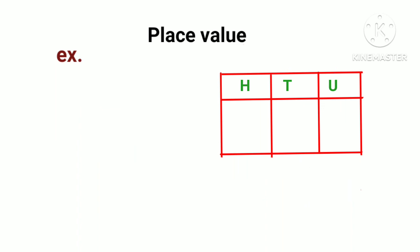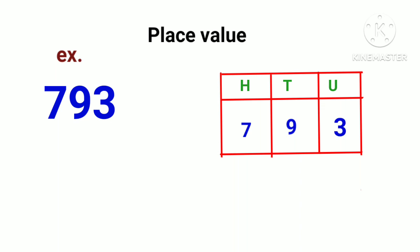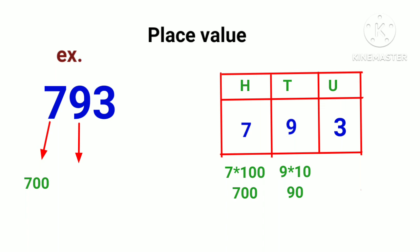Let's see one more example: 793. I write 7 in the 100s column, 9 is in the 10s column, and 3 is in the units or 1s column. So 7 into 100 is 700 — the place value of 7 is 700. 9 into 10 means 90, so the place value of 9 is 90. And 3 into 1 — the place value of 3 is 3.